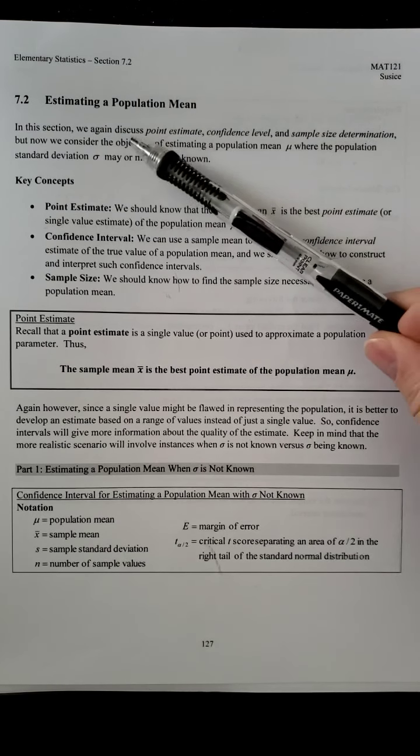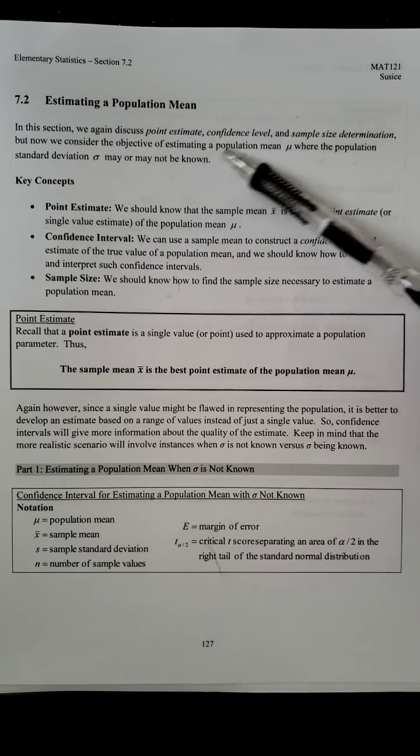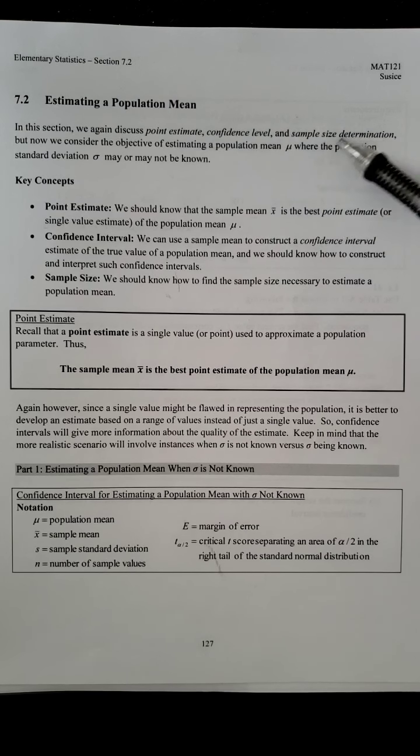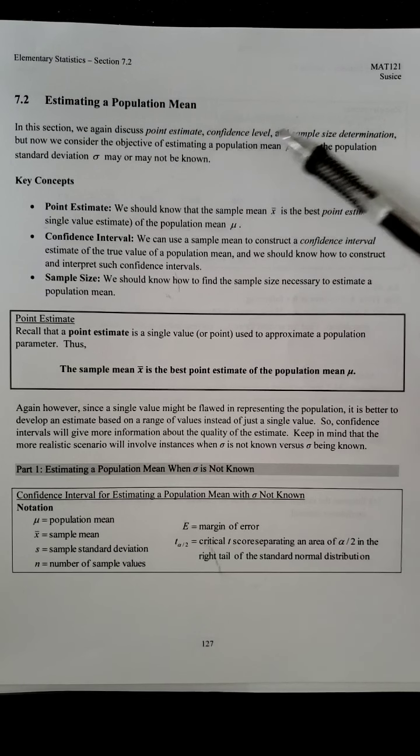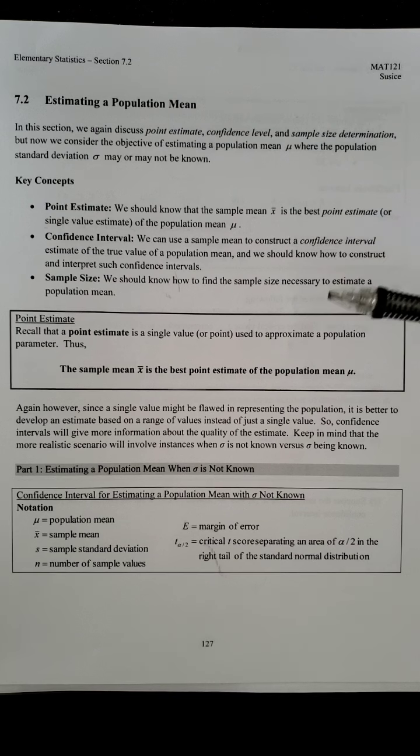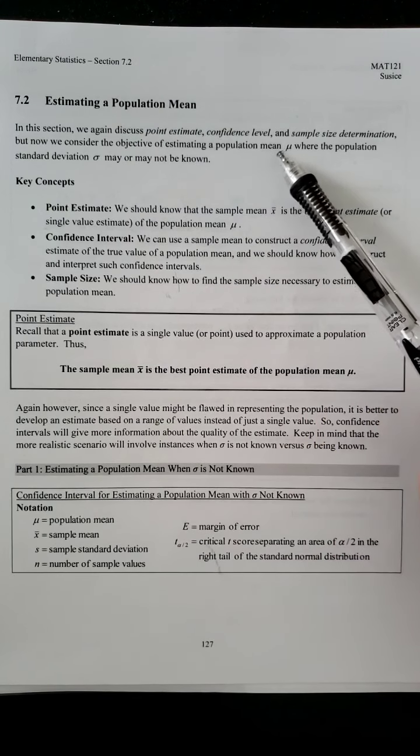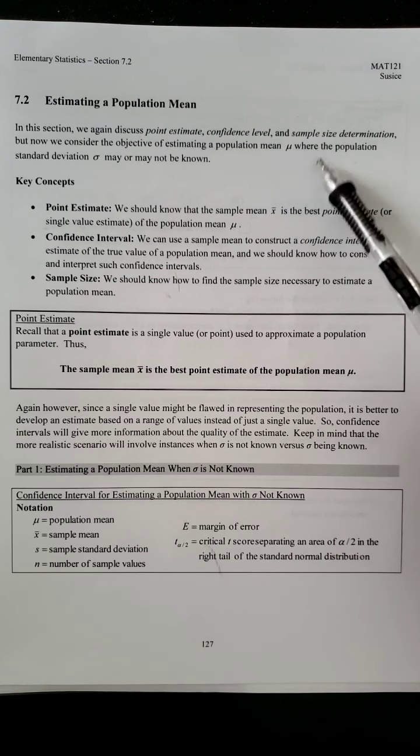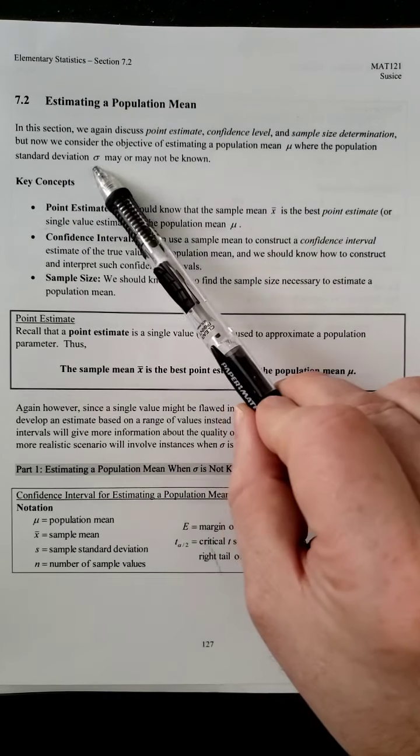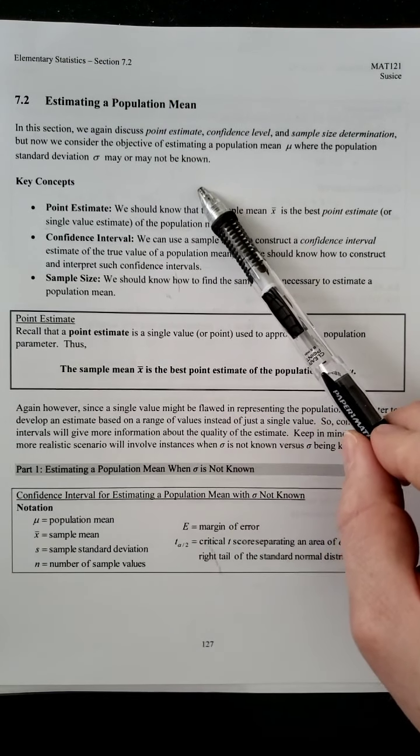So, in this section we again discuss point estimate, confidence level, sample size determination. So we still have those same three elements in this section, but again there's some twists to it. But now we consider the objective of estimating a population mean, mu, where the population standard deviation, sigma, may or may not be known.